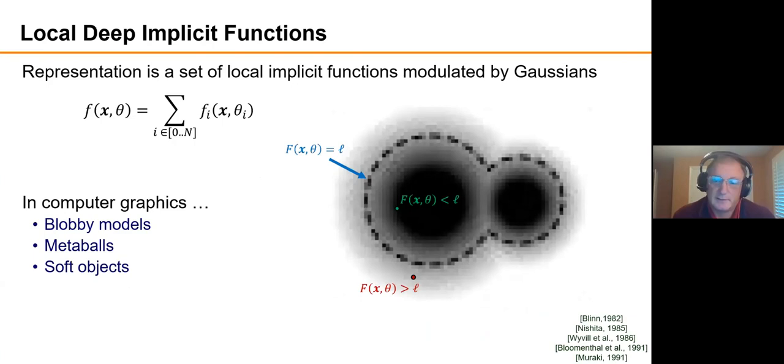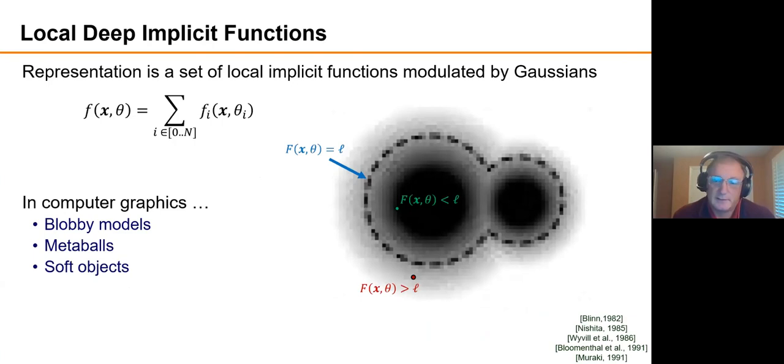Another reason that mixtures of Gaussians are advantageous is that they vary smoothly with the parameters of the Gaussians. So if you move a Gaussian, the shape defined by them varies very smoothly. And this is a property where topology changes are free and things like that. So this is a property that was first described with blobby models or metaballs or soft objects in computer graphics, all the way back in the 80s, where people used to describe shapes by adding more and more Gaussians.